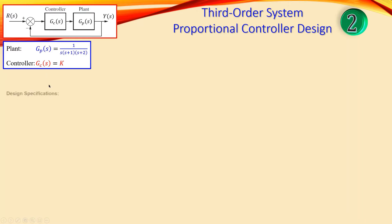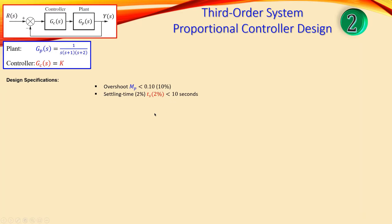The controller is given as a constant k. We have the following design specifications: the overshoot must be less than 10% (0.10), and the settling time under the 2% criterion must be less than 10 seconds. We will now work through these specifications to find a solution.